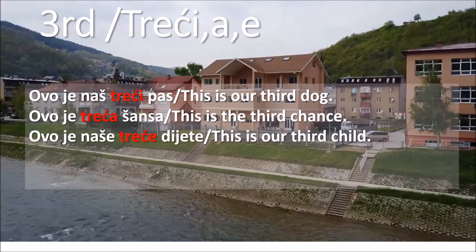Ovo je treća šansa - this is the third chance. Šansa is feminine, therefore we're using treća. The last example: ovo je naše treće dijete - this is our third child. We don't know if this child is masculine or feminine, therefore we're using neuter, so we're using treće.